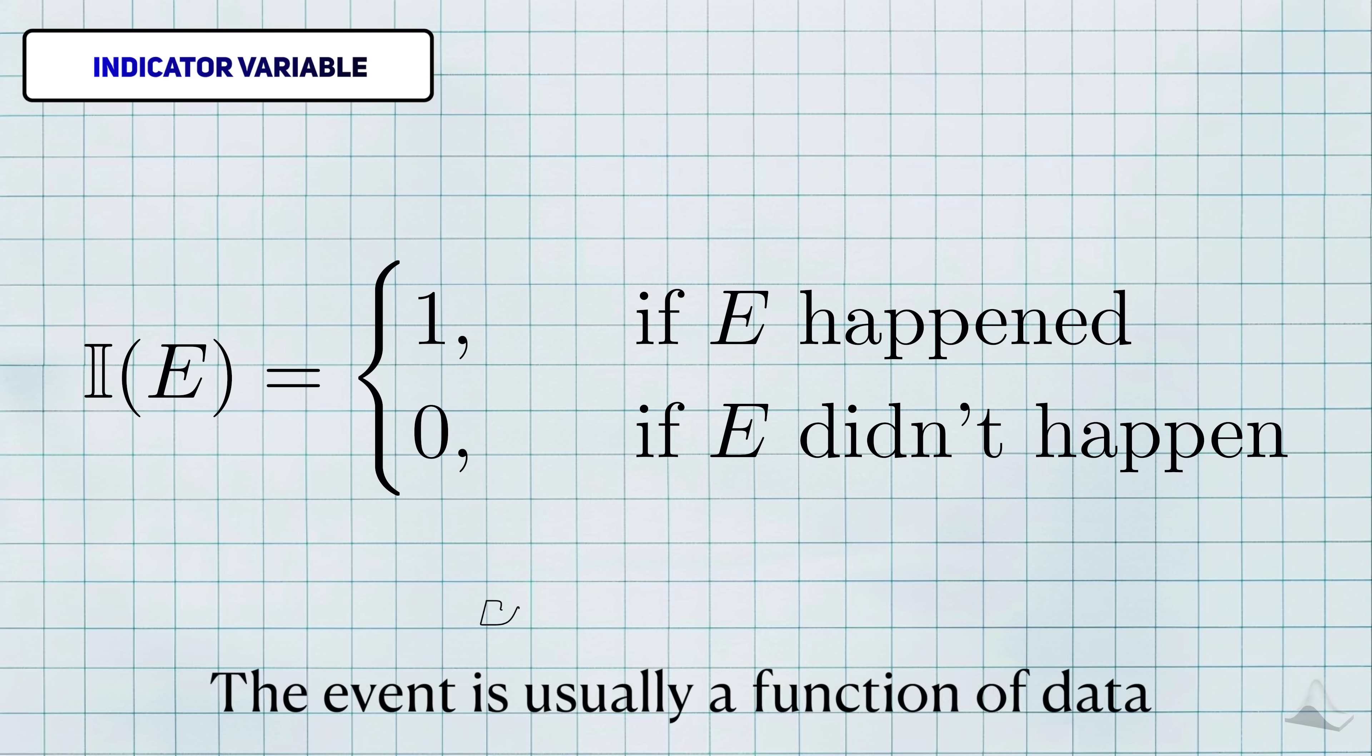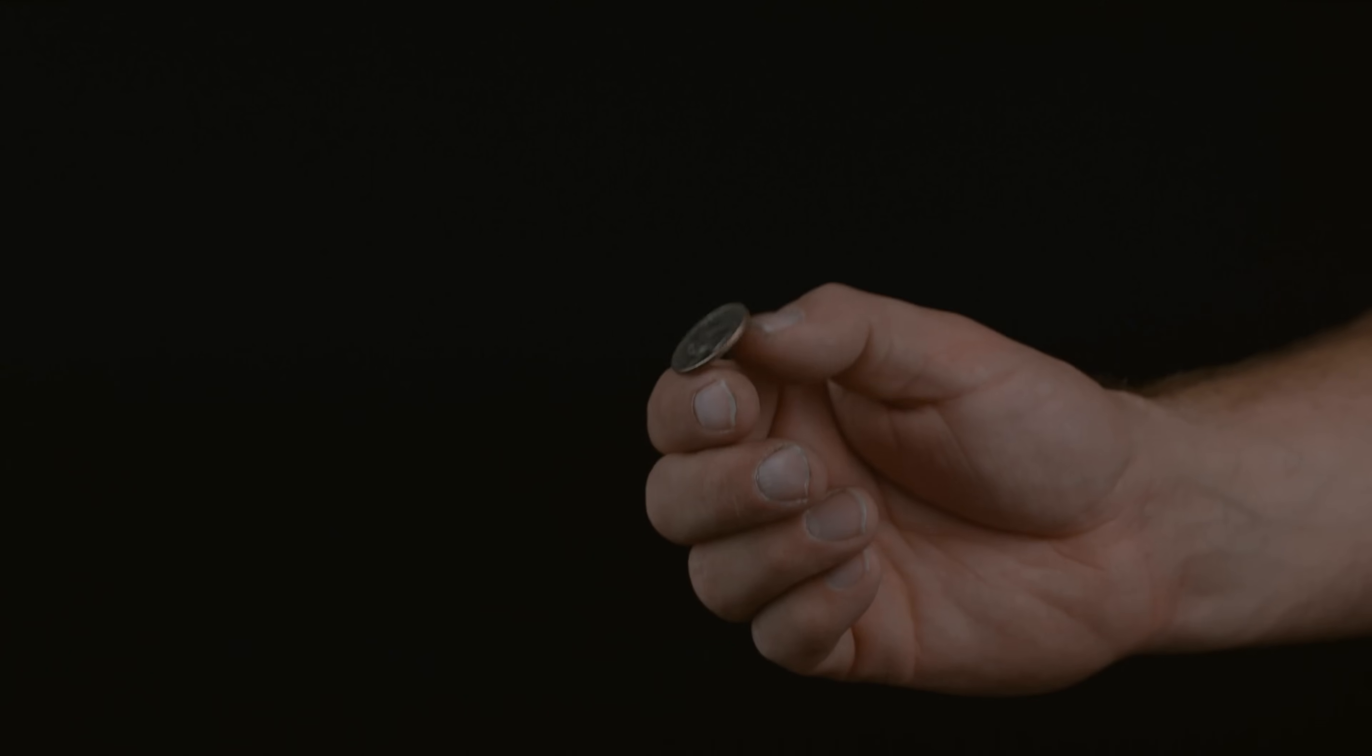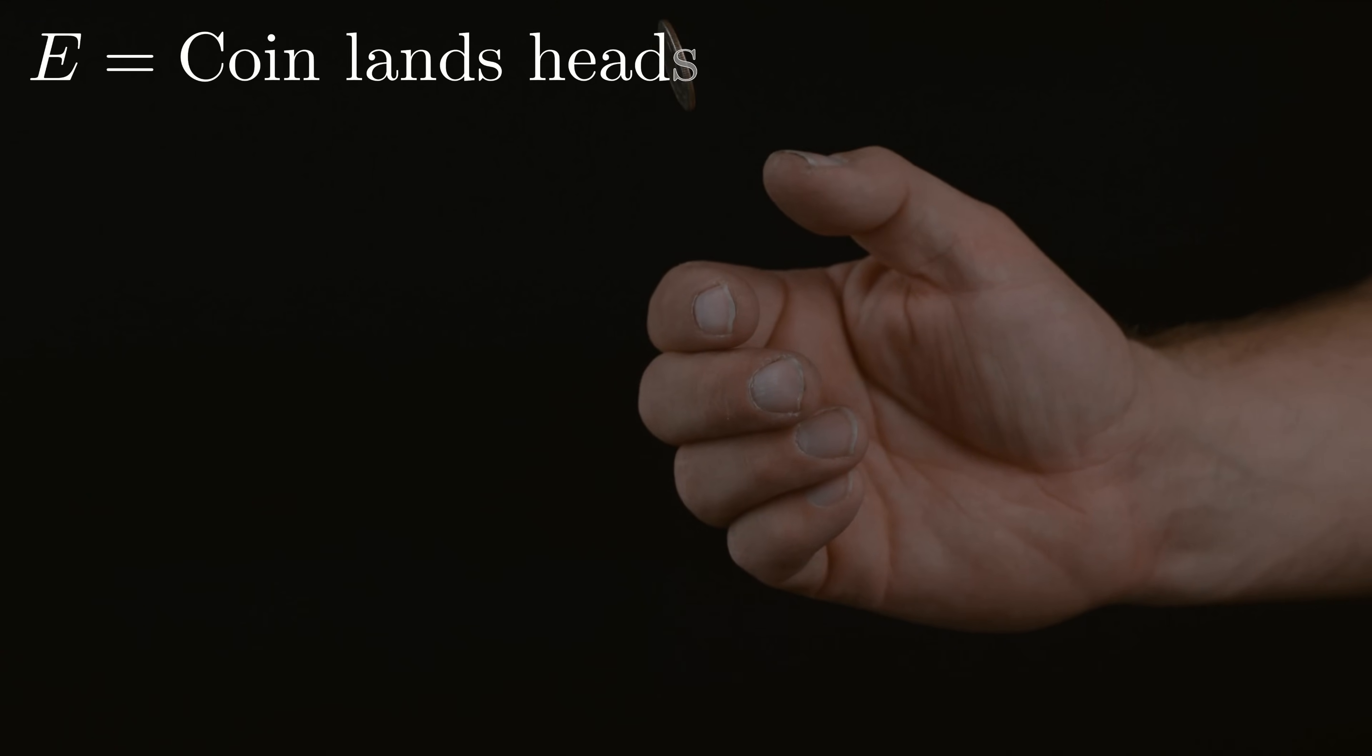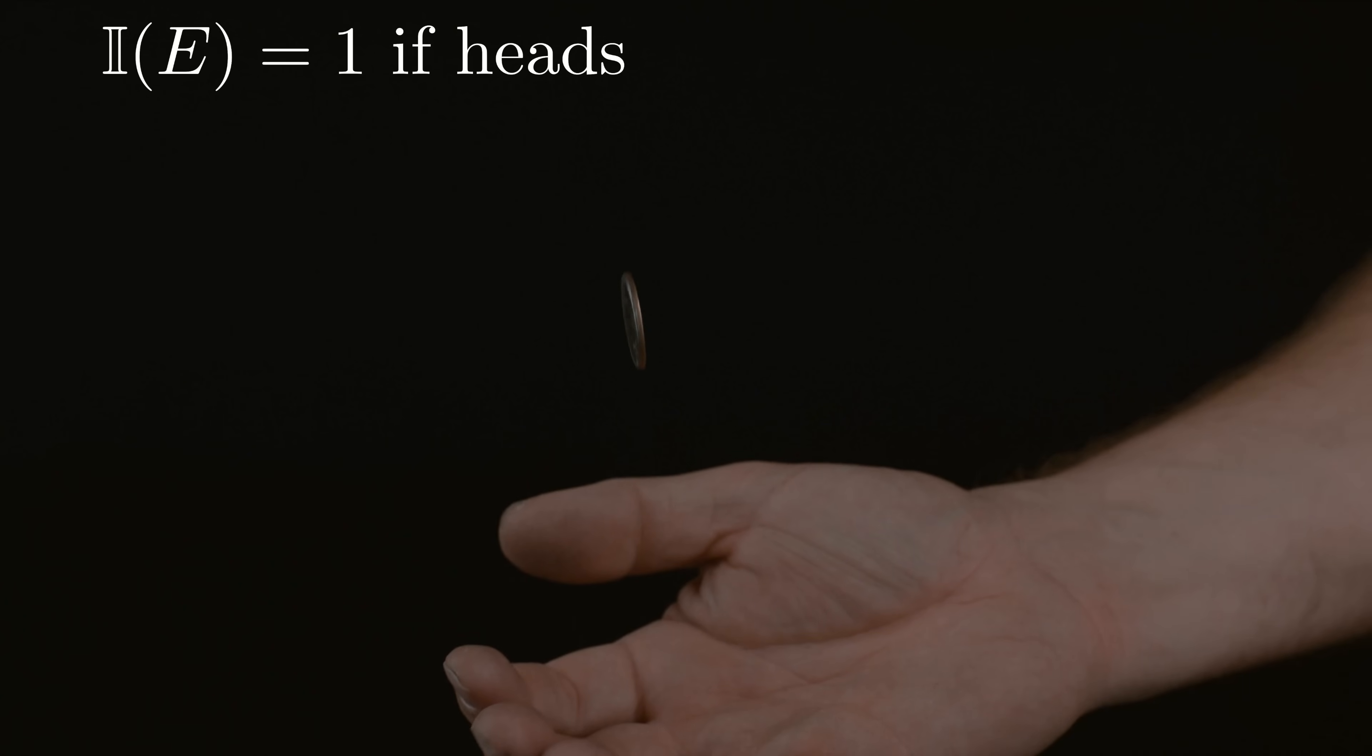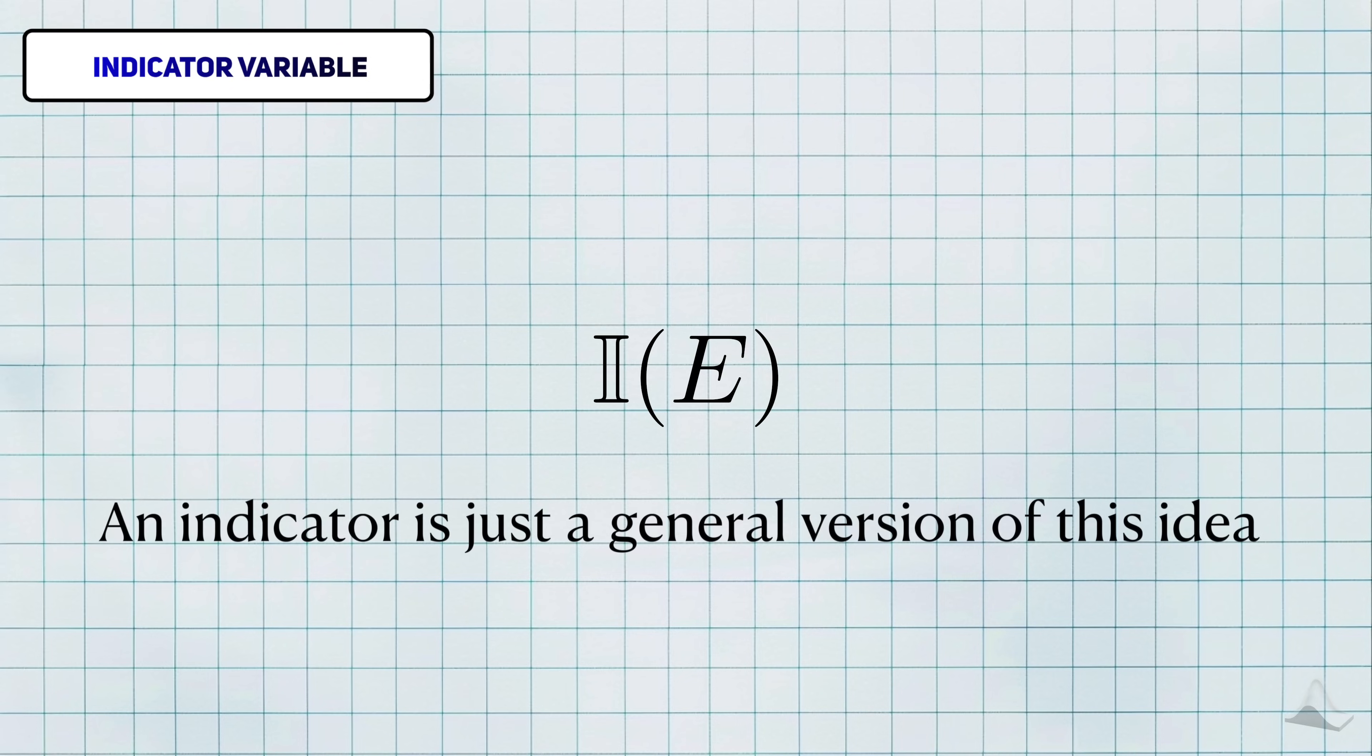In statistics, this event is usually associated with data, so that's why the indicator itself is a random variable. The most famous example is the flipping of a fair coin. I could specify that the event I want to see is if the coin lands heads up. Then the corresponding indicator will be 1 when we get heads, and 0 if we get tails. An indicator is just a more general version of this idea using a different event.